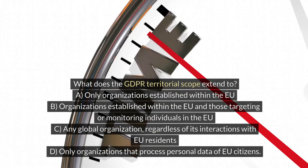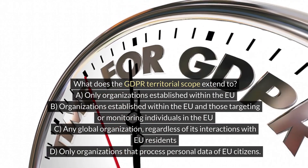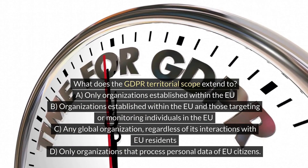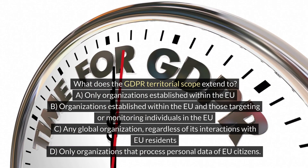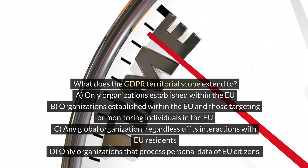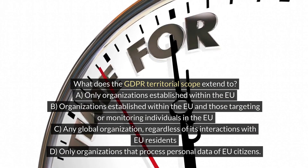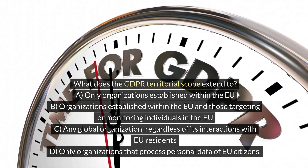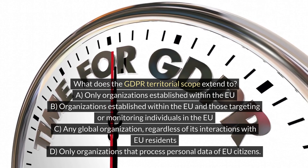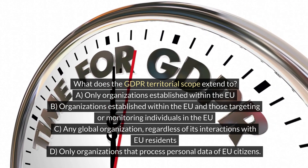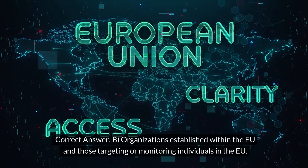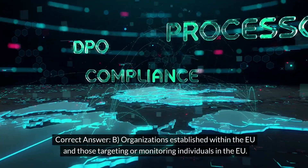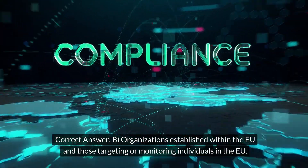What does the GDPR territorial scope extend to? A. Only organizations established within the EU. B. Organizations established within the EU and those targeting or monitoring individuals in the EU. C. Any global organization, regardless of its interactions with EU residents. D. Only organizations that process personal data of EU citizens. Correct answer: B. Organizations established within the EU and those targeting or monitoring individuals in the EU.